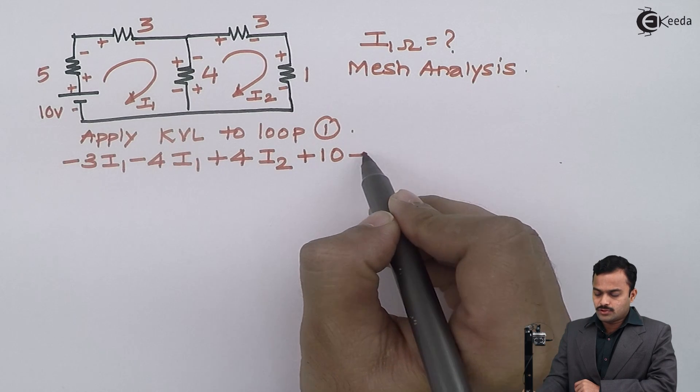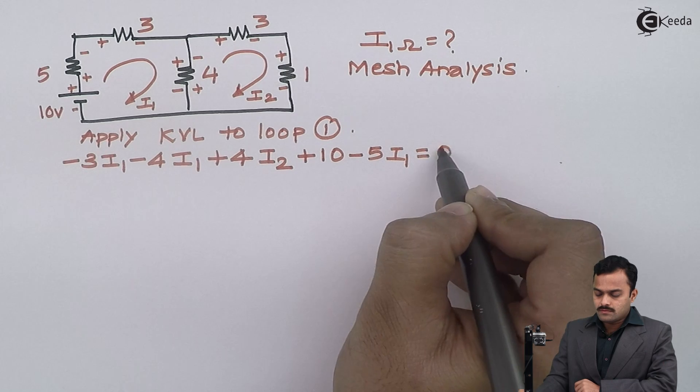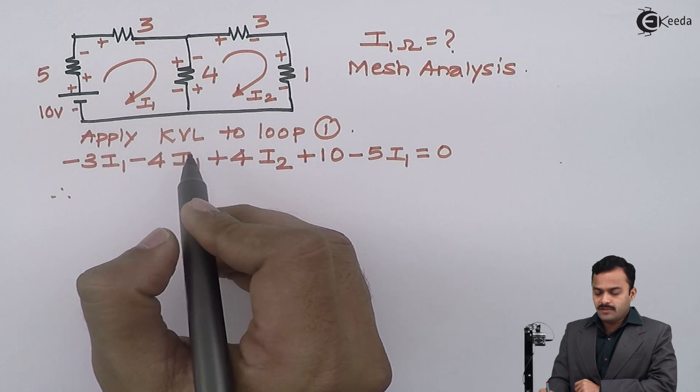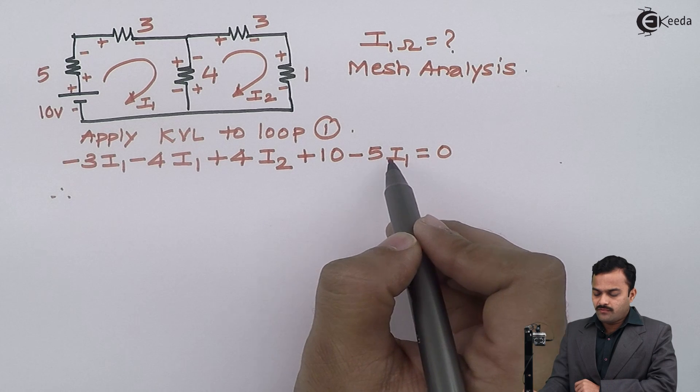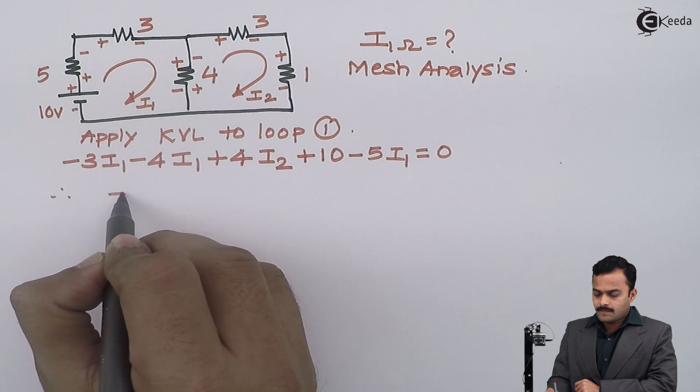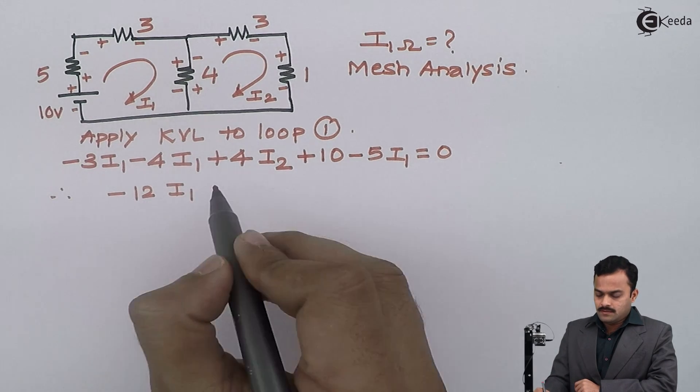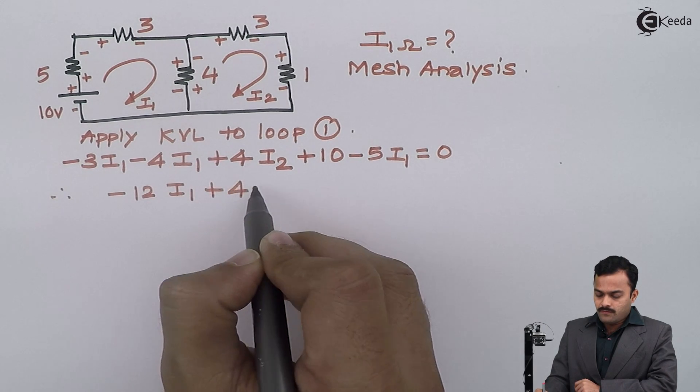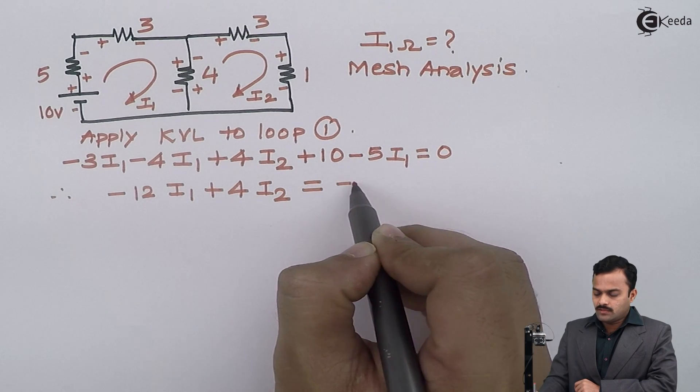Minus again a voltage drop minus 5 I1 equal to 0. After simplifying I will get minus 3 minus 4 and minus 5 as minus 12 I1 plus 4 I2, constant I will take to other side of the equation so I will get equation number 1.